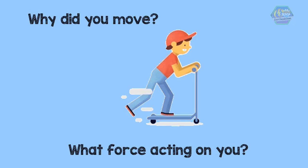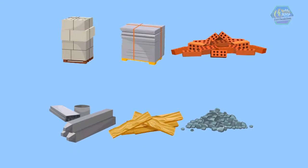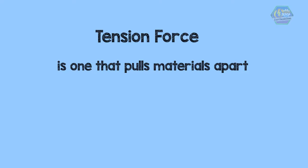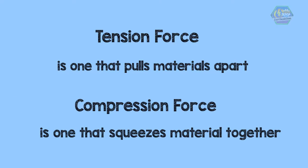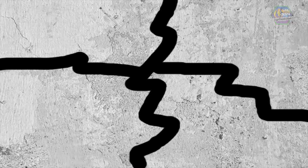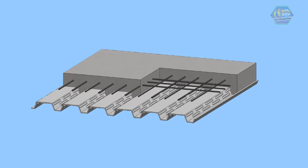Now, what about tension and compression? Every material has the ability to hold up to a certain amount of tension and a certain amount of compression. A tension force is one that pulls materials apart, while a compression force is one that squeezes material together. The forces of compression and tension work together to make a bridge, a house, or any infrastructure stronger. For example, concrete is very strong in compression but breaks easily in tension — that is why steel is often placed inside concrete to give it strength in tension.